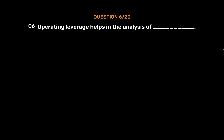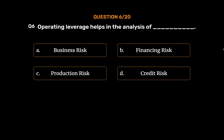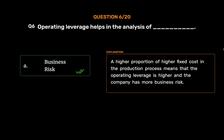Question number 6. Operating Leverage helps in the analysis of: Option A: Business Risk. Option B: Financing Risk. Option C: Production Risk. Option D: Credit Risk. The correct answer is Option A: Business Risk. A higher proportion of fixed cost in the production process means that the operating leverage is higher and the company has more business risk.